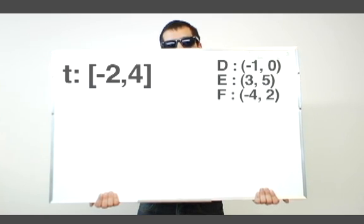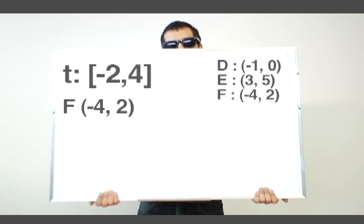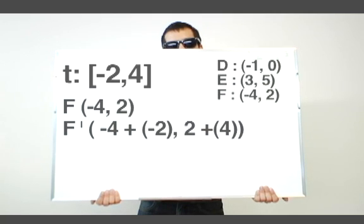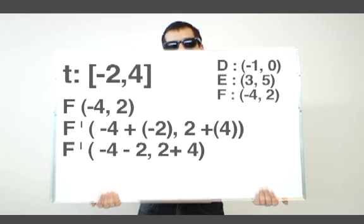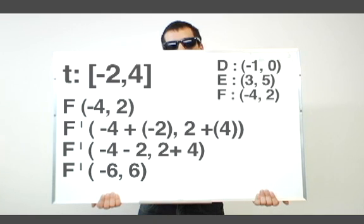We do the same calculation for F point. F equals (-4, 2). Therefore, F' equals -4 plus -2, 2 plus 4. F' equals -4 minus 2, 2 plus 4. Our final F' point is (-6, 6).